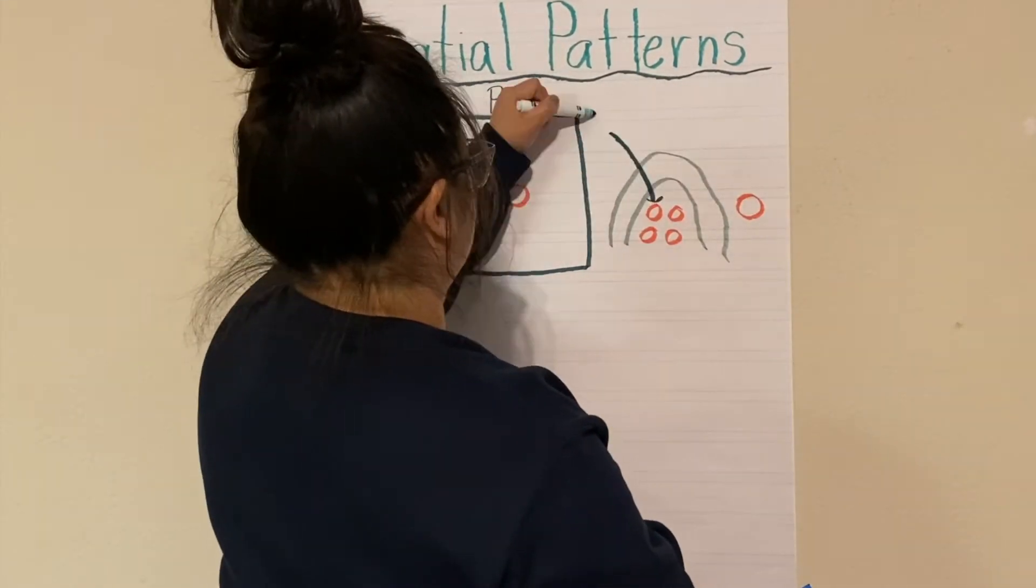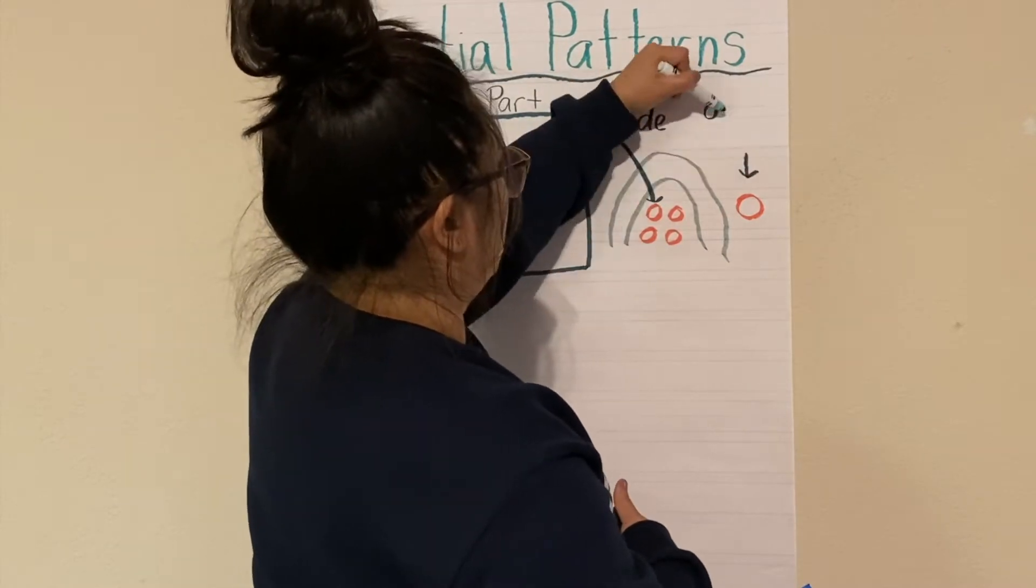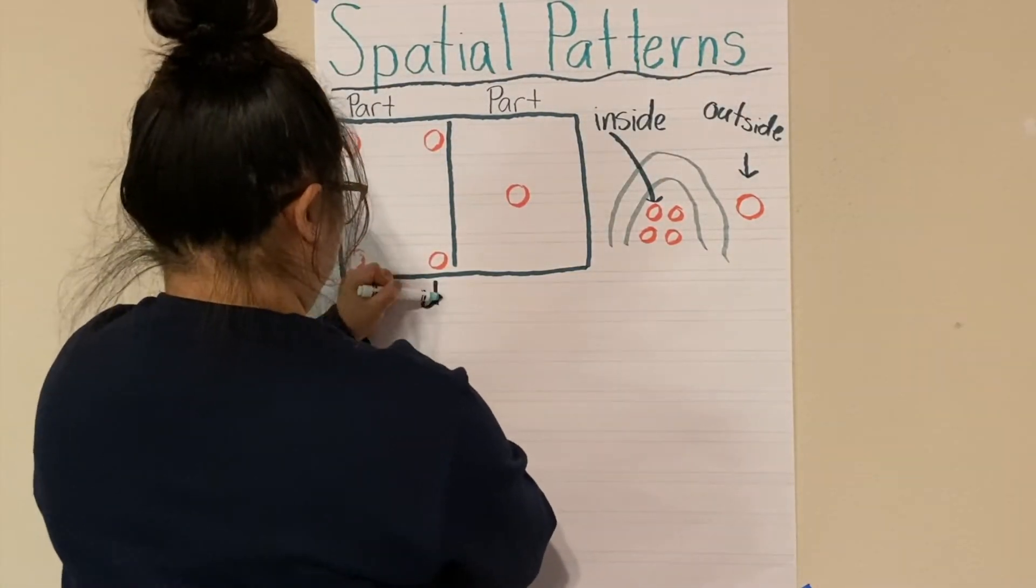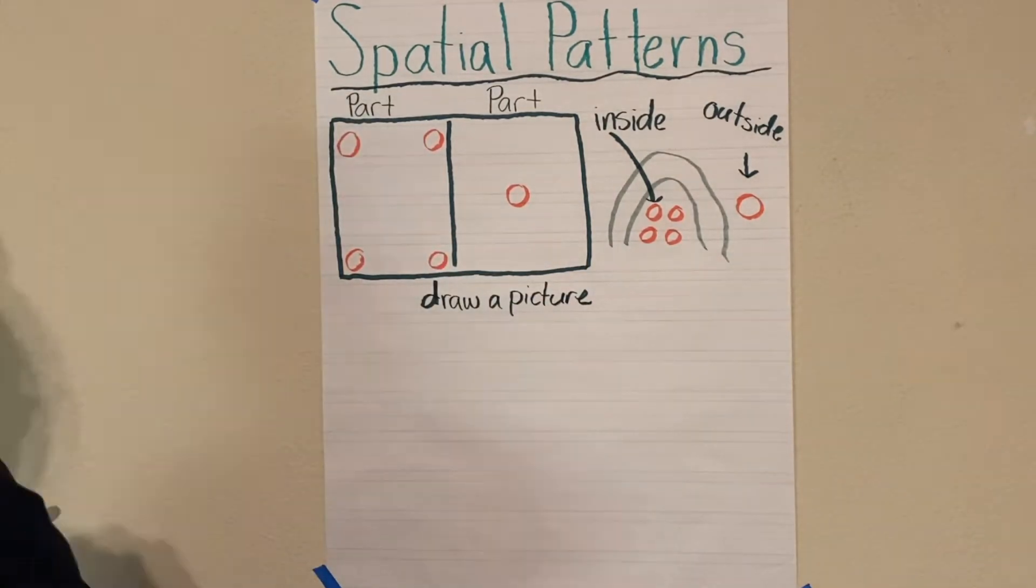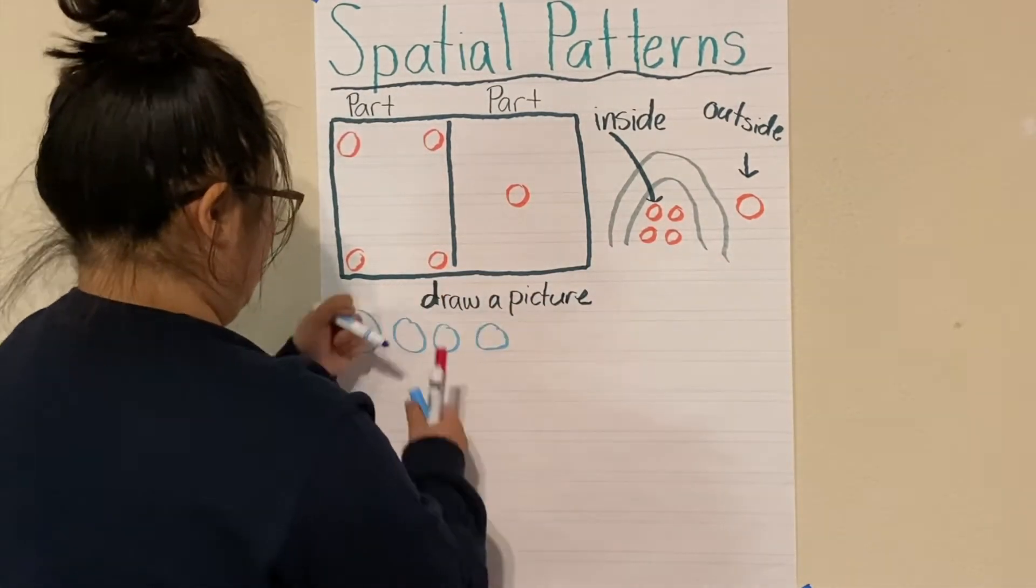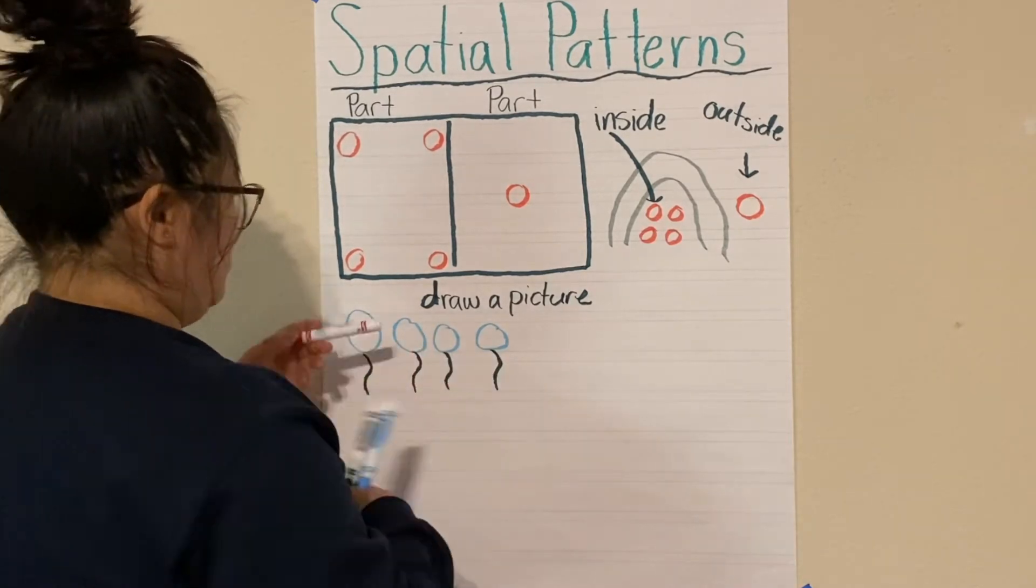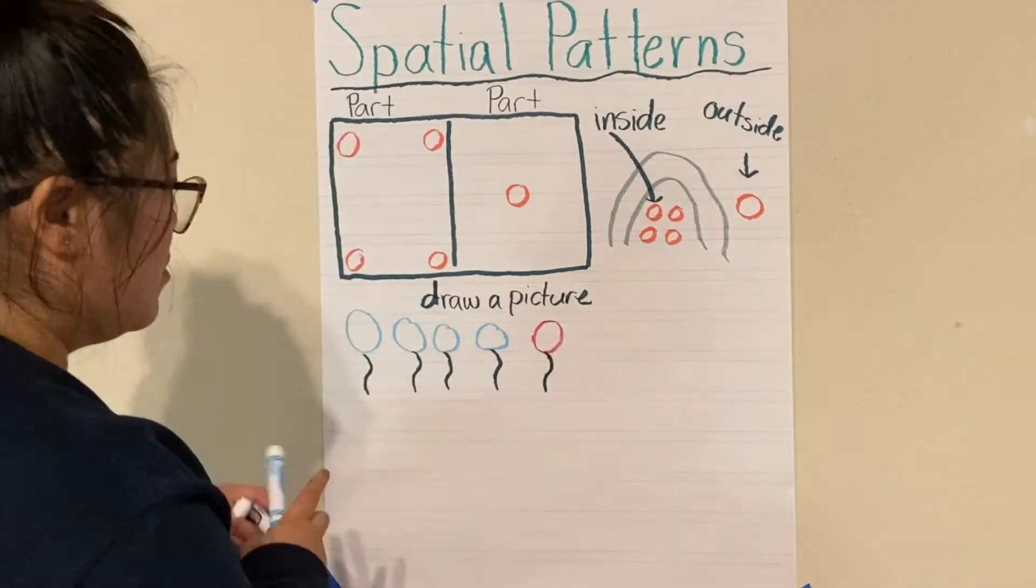Now I'm making an inside-out spatial pattern where there's four inside and one outside. Another example of a spatial pattern is drawing a picture. I decided to draw pictures of balloons so I drew four blue balloons and one pink balloon.